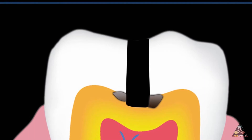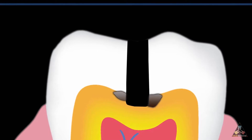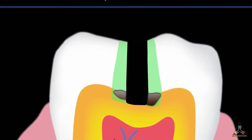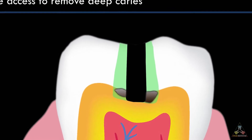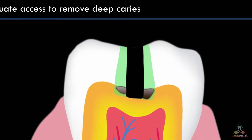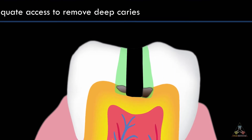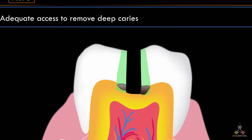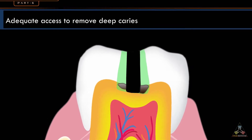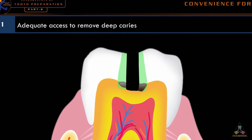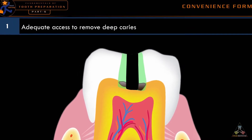Still, we can see some decay left in the deeper region which could not be removed further with any form of instrumentation. In order to remove this decay, we may have to extend the preparation buccal, lingual, mesial or distal depending on the location of the decay. Ideally this should not be done as we are removing more sound tooth structure, but there is no other way to remove the decay. Thus, the cavity is extended to improve the access to remove deep caries, and removing healthy tooth structure to facilitate removal of deep caries is a convenience feature.